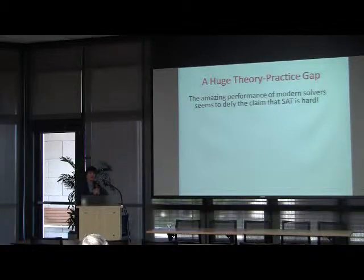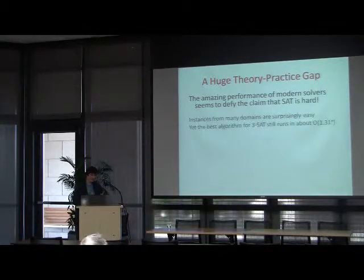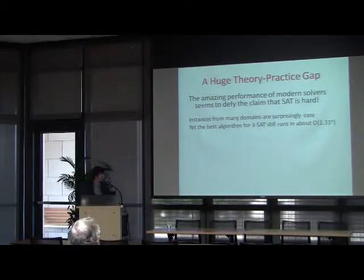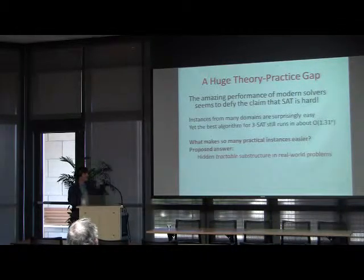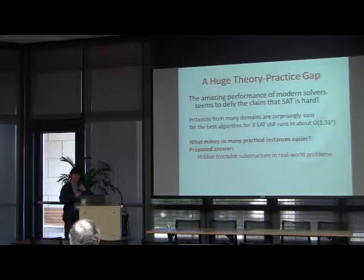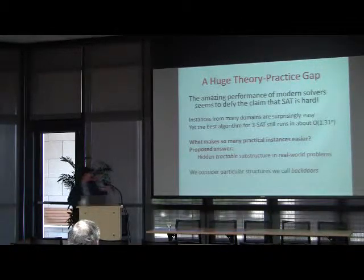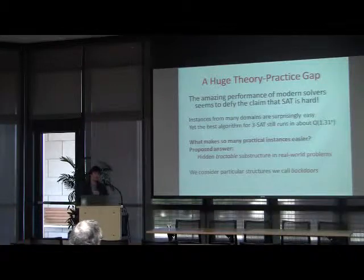There's a huge theory-practice gap here. The amazing performance of SAT solvers seems to be in conflict with the idea that SAT is actually hard. Instances from these domains are surprisingly easy, yet the best-known worst-case algorithm for 3SAT still runs in some exponential time. So what makes so many practical instances easier? One proposed answer is that there is hidden tractable substructure somewhere in these real-world problems — structure that doesn't exist in general.